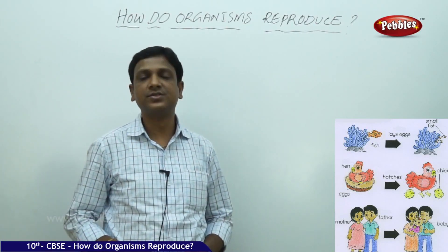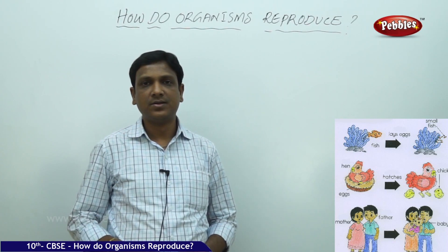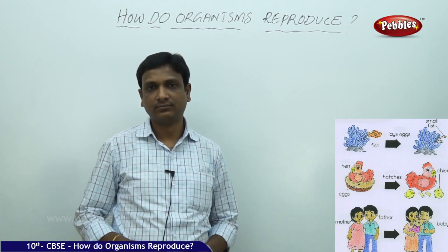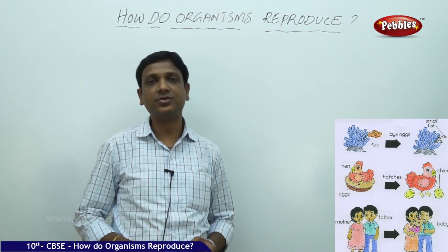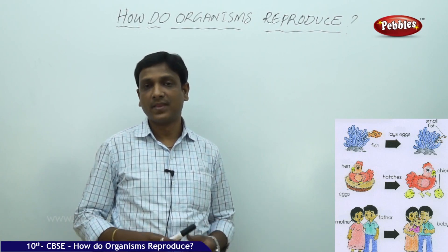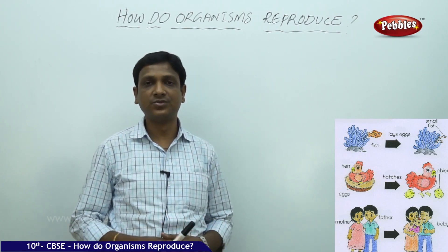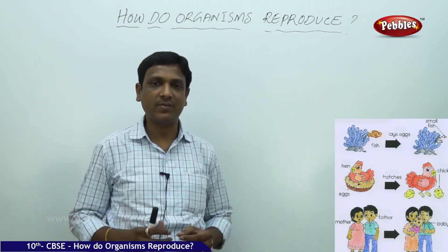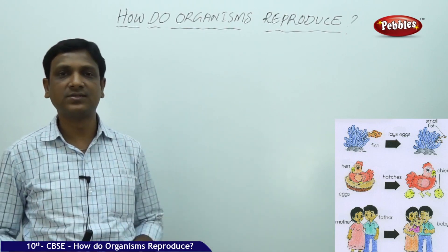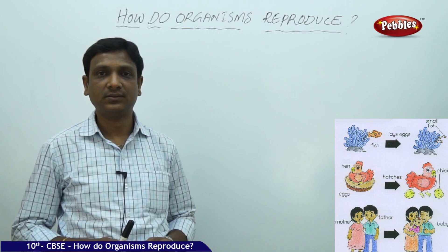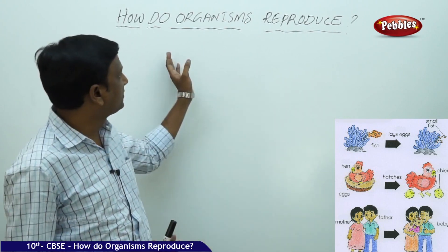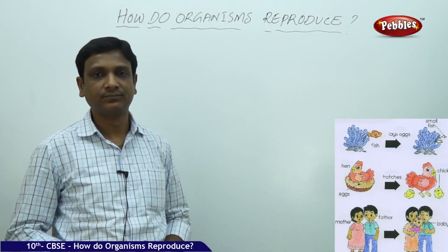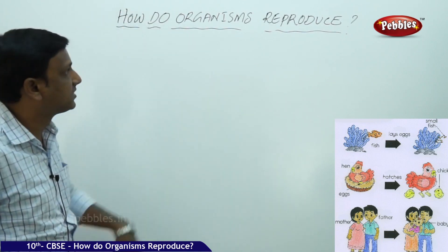How do organisms reproduce? Today we are going to discuss another important life process — reproduction. In the previous chapters we learned about nutrition and other life processes that help organisms survive. An organism needs to carry out so many life processes to stay alive. The lesson is: how do organisms reproduce?